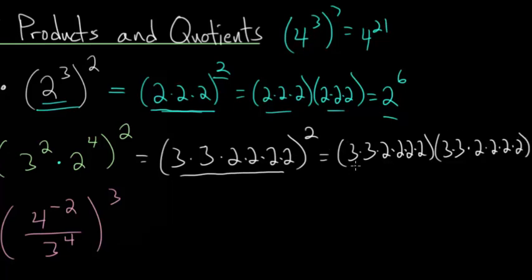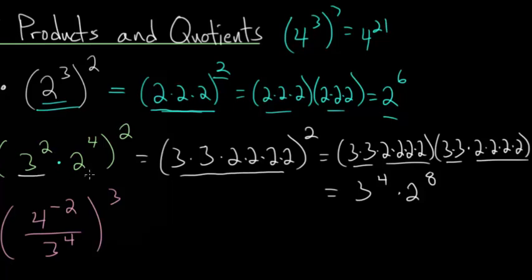Working it out, you have 3 times 3 times 3 times 2 times 2 times 2 times 2, multiplied by itself — giving another 3 times 3 and another 4 2's. Counting them up, you have 4 3's, so 3 to the fourth, and 8 2's, so 2 to the eighth. What you can notice is that each term was separately raised to the second power. When you raise an exponent to an exponent you multiply, so in some sense this 2 — this outer exponent — is distributed to both of these terms.